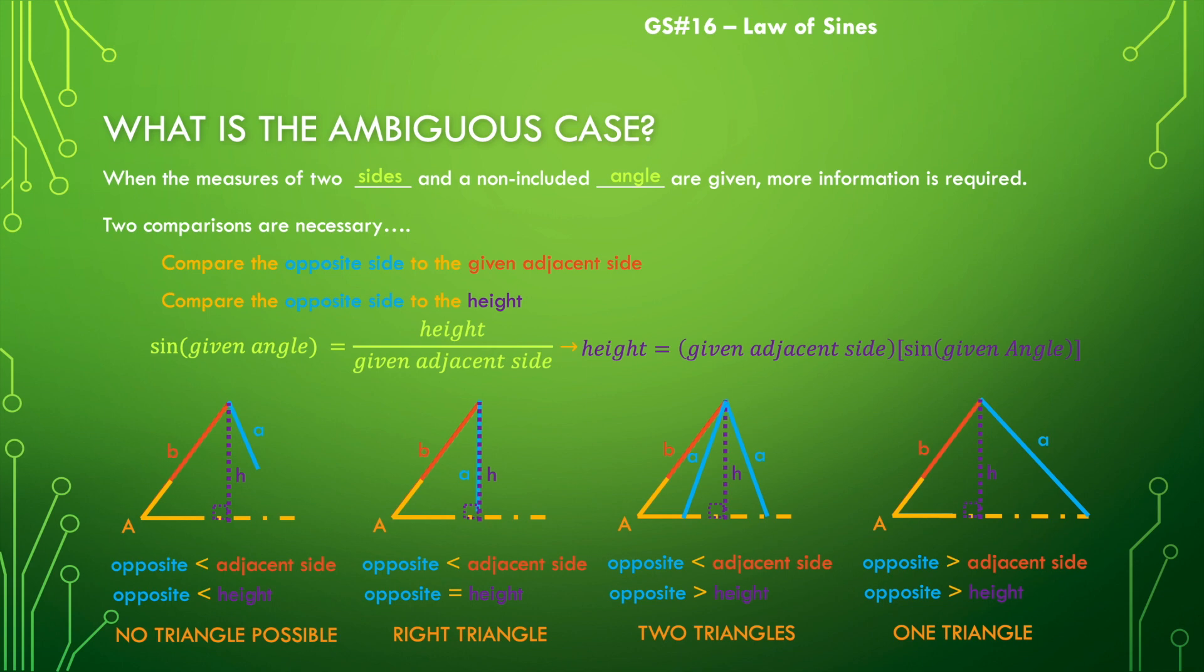Okay. So this is why just having two sides and a non-included angle given to us is a little bit unclear, a little bit vague and ambiguous. So we need to be just very careful when we're trying to solve triangles.